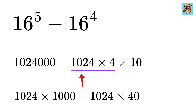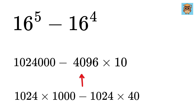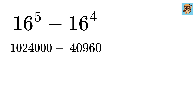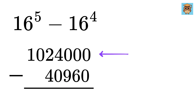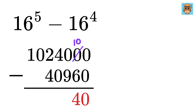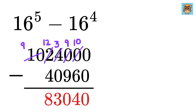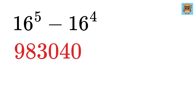1024 times 4 is 4096, and add one more zero here, giving 40,960. Now we need to subtract both of these: 1,024,000 minus 40,960. Starting from the right: 0, then 10 minus 6 is 4, then 9 minus 9 is 0, then borrowing gives 3 minus 3 equals 0, then 12 minus 4 equals 8, borrow 1, giving 9. So the answer to our question is 983,040.